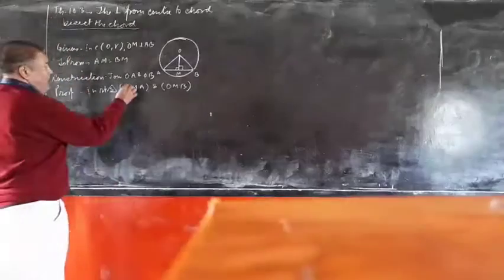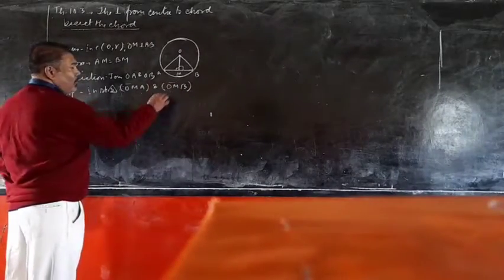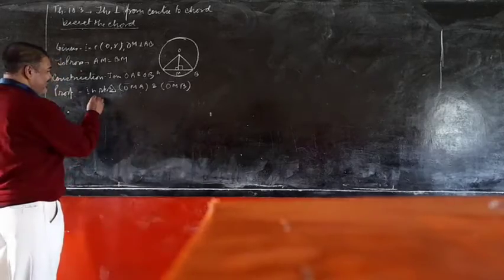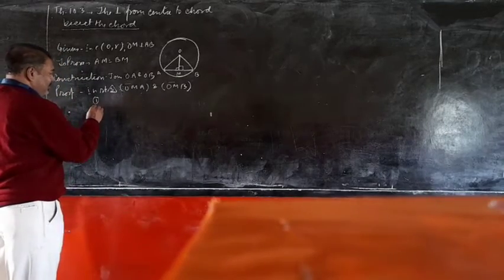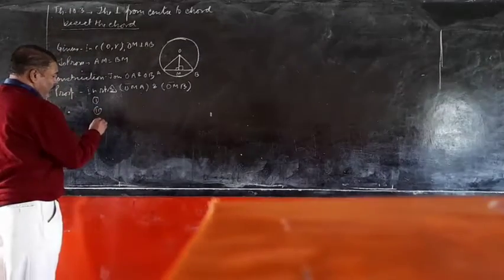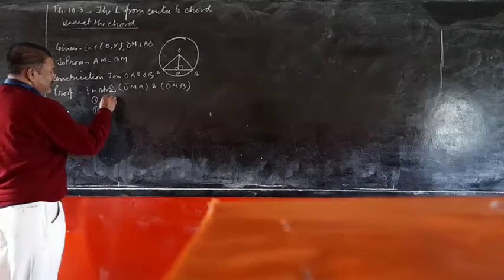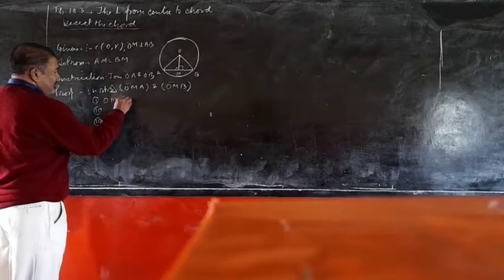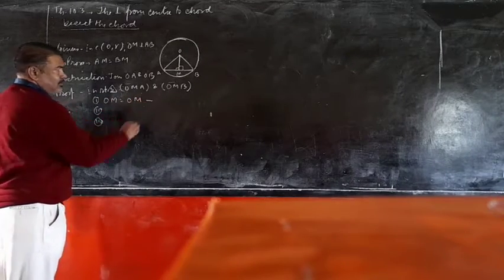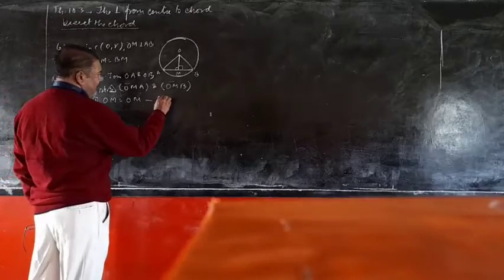Here OM is equal to OM. There must be at least three conditions. OM is equal to OM — what is the reason for this? It is common, because it is the common side of both triangles.